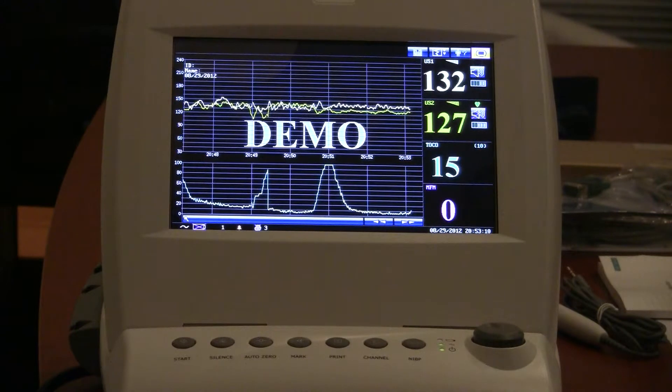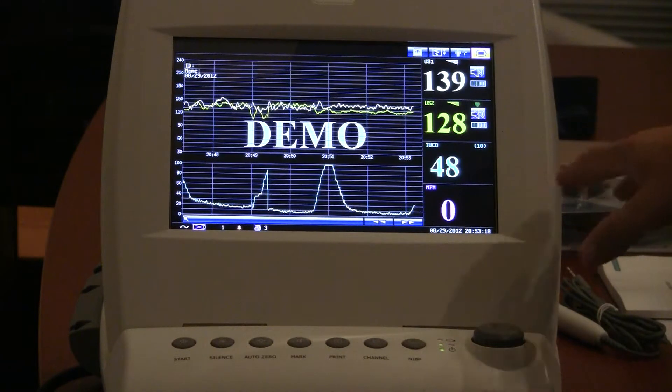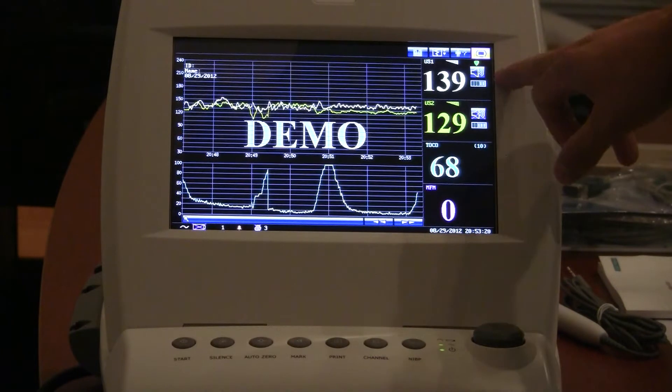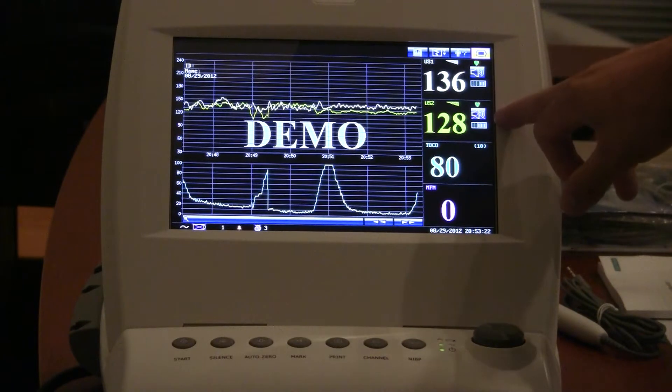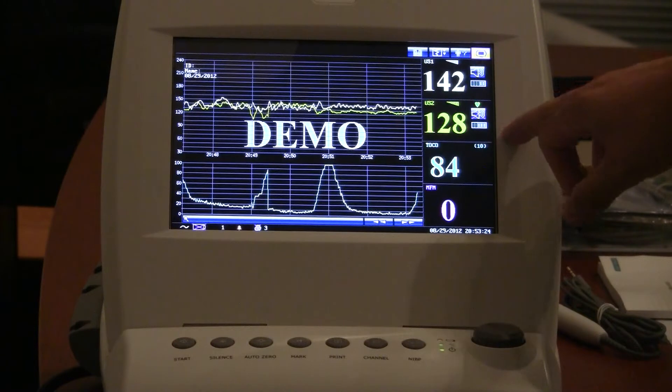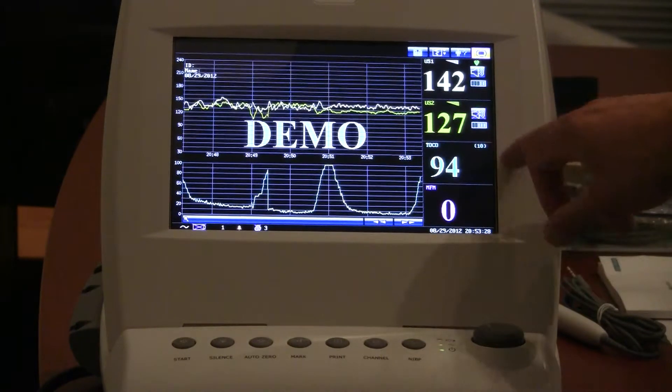We've got this unit right now in demo mode so we can see some history of fetal heart rate monitoring and some contractions. Going across the top here, you've got fetal heart rate one, fetal heart rate two. This is a model that will monitor twins. You've got your TOKO pressure here to monitor contractions.